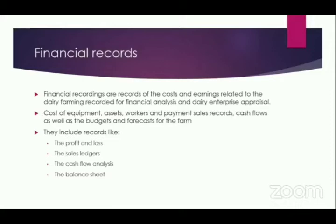Financial records show the cost of equipment, the assets we have, workers' payments, sales records, cash flows, inflows and outflows, as well as budgets. We need a profit and loss account — the P&L — which shows what money has come in, incomes versus expenditures for a certain period. Most farms will do a P&L weekly or monthly, the most standard being monthly, so we know whether that month we made a profit or loss. We also need sales ledgers to record every sale going out of the farm.